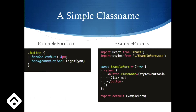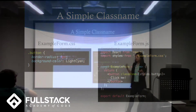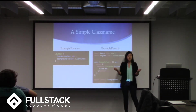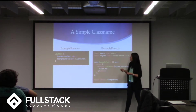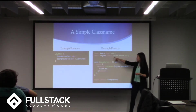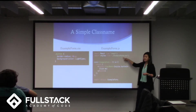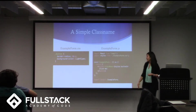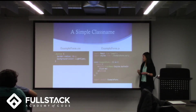Let's start really simple. What does a class name look like? On the left-hand side you see something familiar — a button class with really simple styling. On the right-hand side I have my component JS file, my example form. Notice that my two files are named the exact same thing, just CSS versus JS — this makes it easy to figure out which styles correspond to which components. Then in your JS file you import your CSS as a dependency, which in this case I'm naming styles.